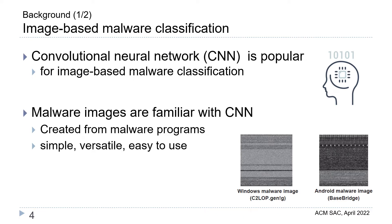Next, we describe image-based malware classification. Convolutional Neural Networks (CNNs) are popular for image-based malware classification. Malware images are well-suited to CNNs. They are created from malware programs and are simple, versatile, and easy to use.